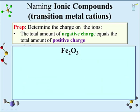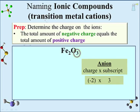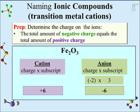For Fe₂O₃, the subscript on oxygen is 3, and oxygen adopts a −2 charge. The total negative charge is −2 × 3 = −6, so the total positive charge must be +6. Using the subscript 2 on iron, the charge on iron times 2 must equal +6, so the charge is +3. In this compound, iron is a +3 cation.